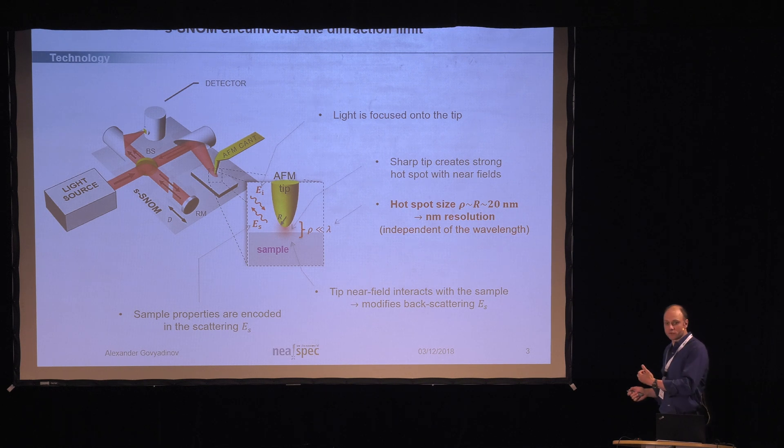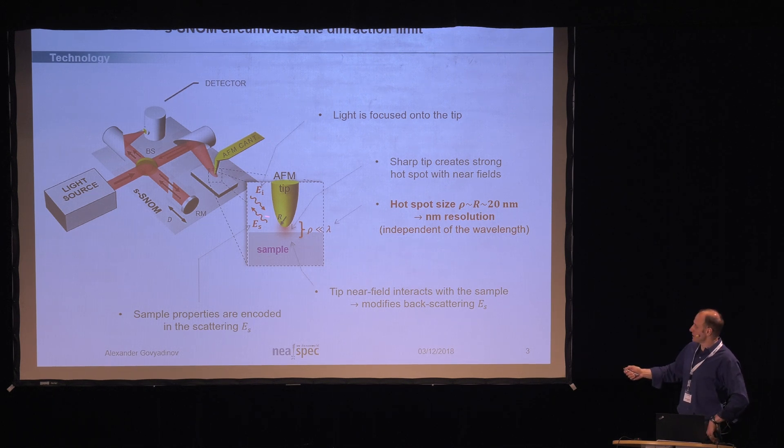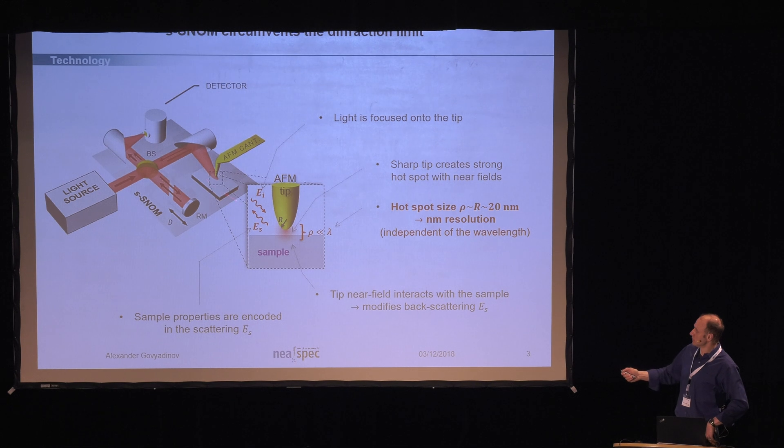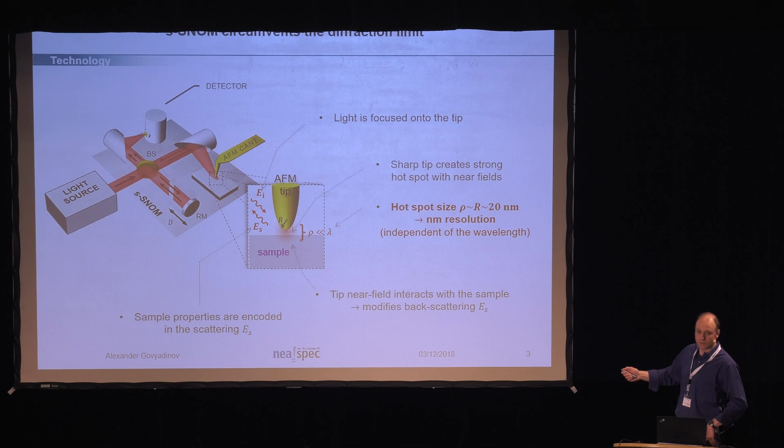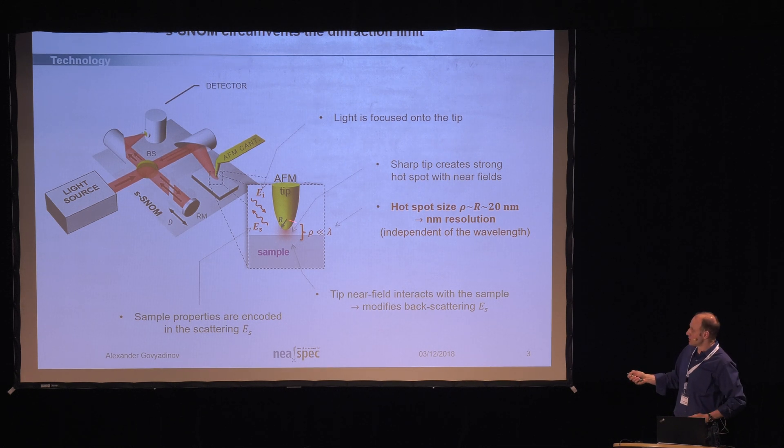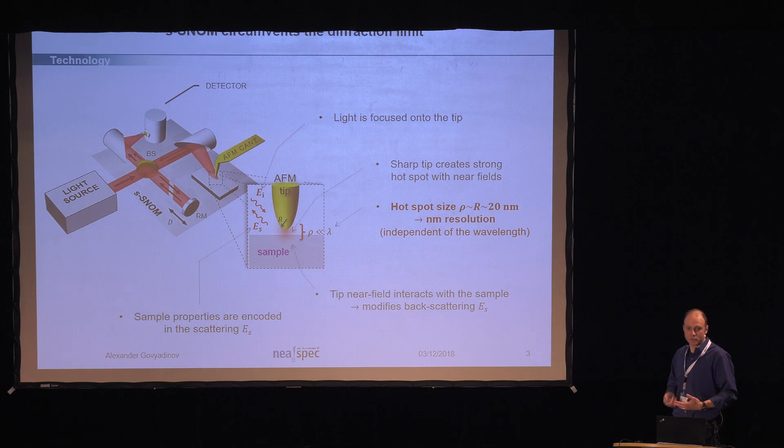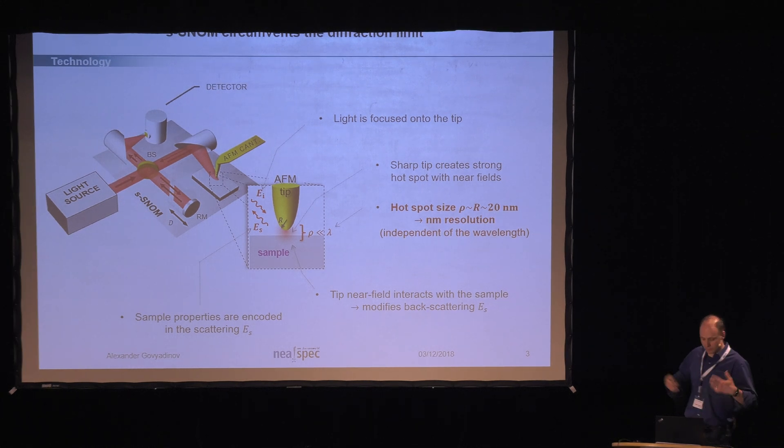This hot spot, because the tip is sharp, is very well localized to the scale of 20 nanometers. Essentially, it's on the localization scale of the tip radius. So this is actually the reason why NeoSNOM is able to provide the nanoscale resolution. Now, what happens if you put the sample into this hot spot? The tip and the sample start interacting, electromagnetically, of course. And that modifies the backscattered light from the tip. So the tip captures the light, interacts with the sample, and then scatters back, and this scattering is detected at the detector. The scattering depends on what the sample is, what the properties of the sample are. And this is why the properties of the sample are encoded in the scatter signal. This is the basic principle.